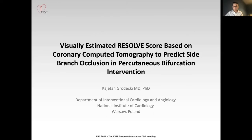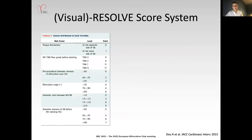We move to the next lecture by Dr. Grodecki, which is 'Visually Estimated Resolve Score Based on CTA to Predict Side Branch Occlusion.' Thank you for the invitation to present at EBC 2021. Bifurcation lesions account for 15 to 20% of all percutaneous coronary interventions, and side branch occlusion remains a major procedural complication. To predict the probability of side branch occlusion after main vessel stenting, the Resolve score was designed for evaluation of invasive coronary angiograms, and this simple tool showed good results with both quantitative measurements and visual estimation.